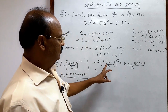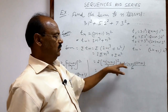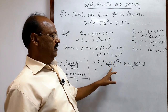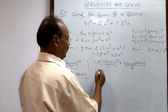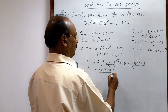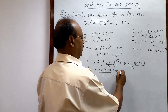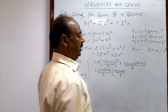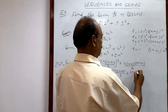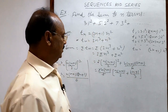We can take n into n plus 1 common from both terms. In the first term the numerator has n into n plus 1, and in the second term as well. Taking n into n plus 1 common, and 2 common in the denominator — both terms have denominator factors of 2 — gives n into n plus 1 divided by 2. The second term then has 2n plus 1 divided by 3 remaining.